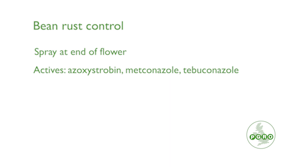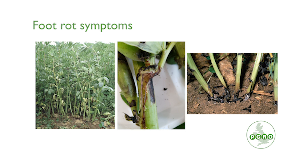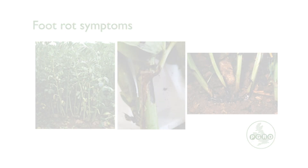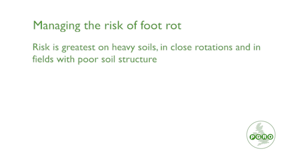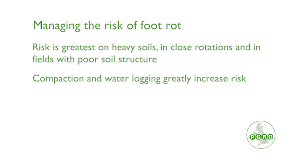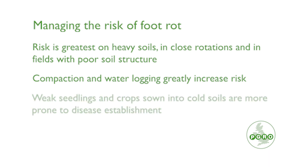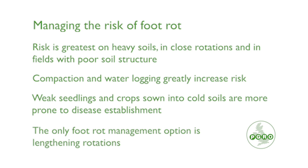Foot rot is a soil-borne disease caused by a pathogen complex infecting roots. Infected plants show blackened stem bases and roots and their water and nutrient uptake is reduced. The risk of disease development is greatest on heavy soils, in close rotations, and in fields with poor soil structure. Compaction and waterlogging greatly increase risk. Weak seedlings and crops sown into cold soils are more prone to disease establishment. The only foot rot management option is lengthening rotations.